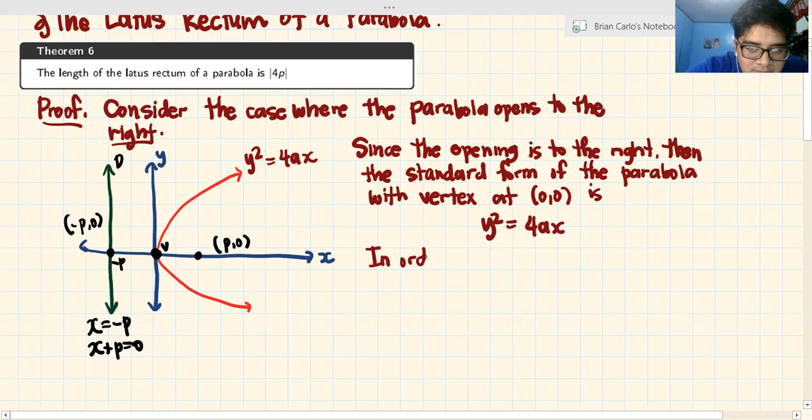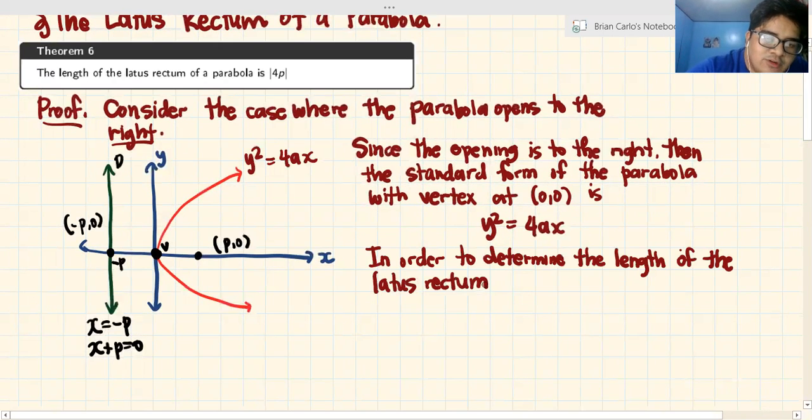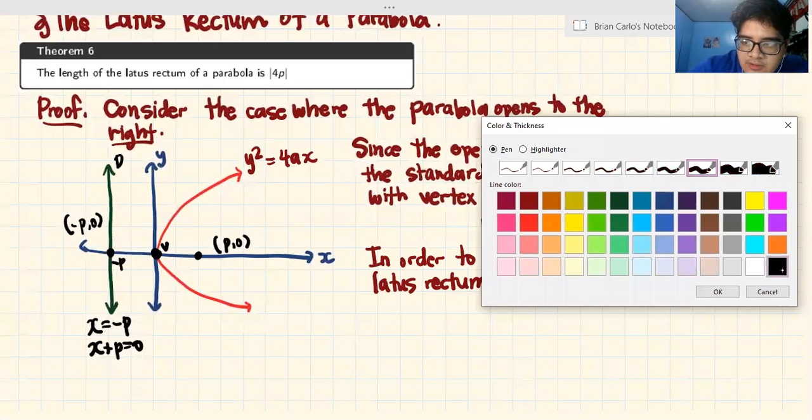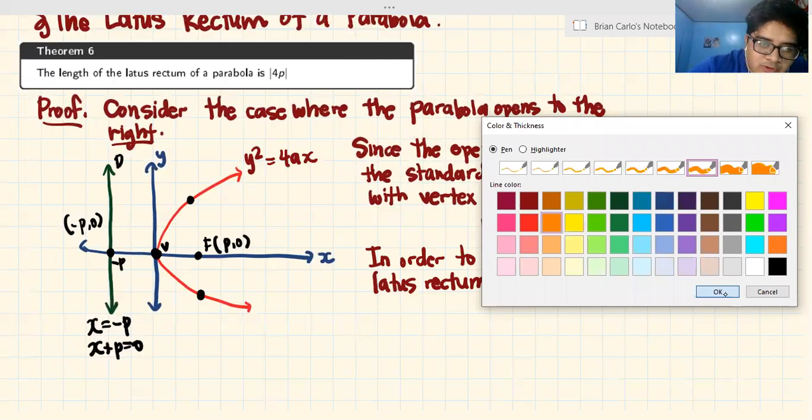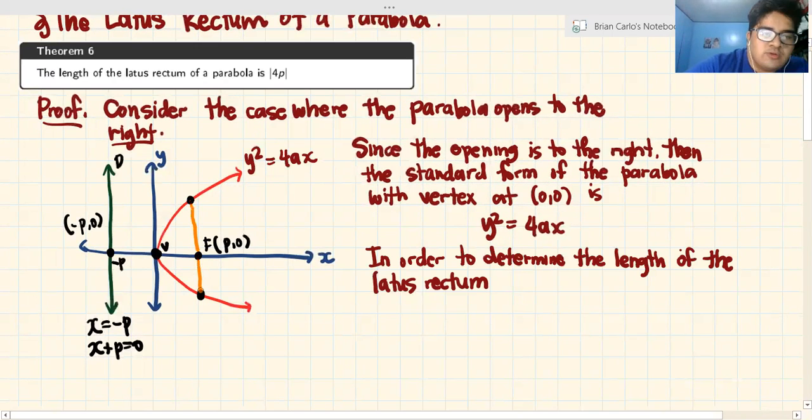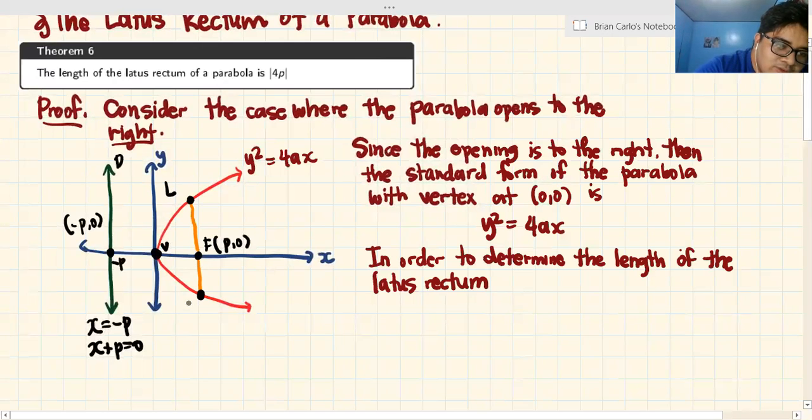Now, in order to determine the length of the latus rectum, first we have to determine where is the latus rectum in our illustration. This is the focus. So this means these points are the potential latus rectums. This chord that passes through the focus is a latus rectum.